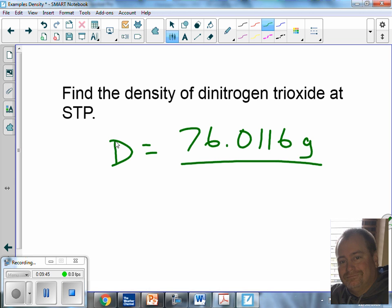At STP, this gas has a volume of what? 22.4 liters. So, my density is equal to the mass divided by the volume, that 76.0116 divided by 22.4 is going to give me 3.39 grams per liter.